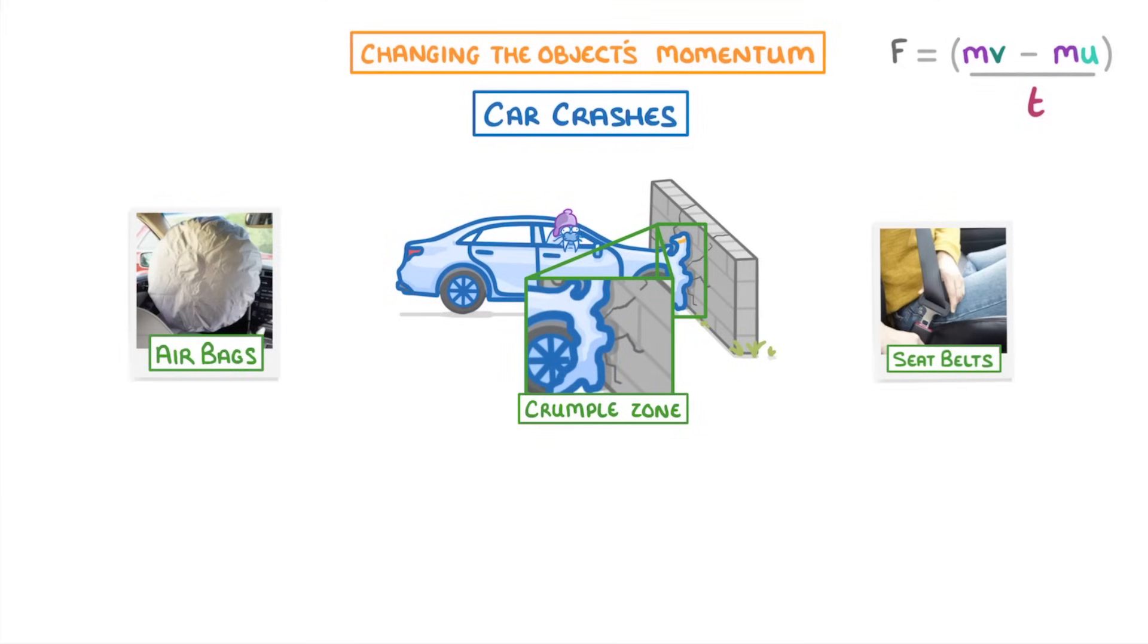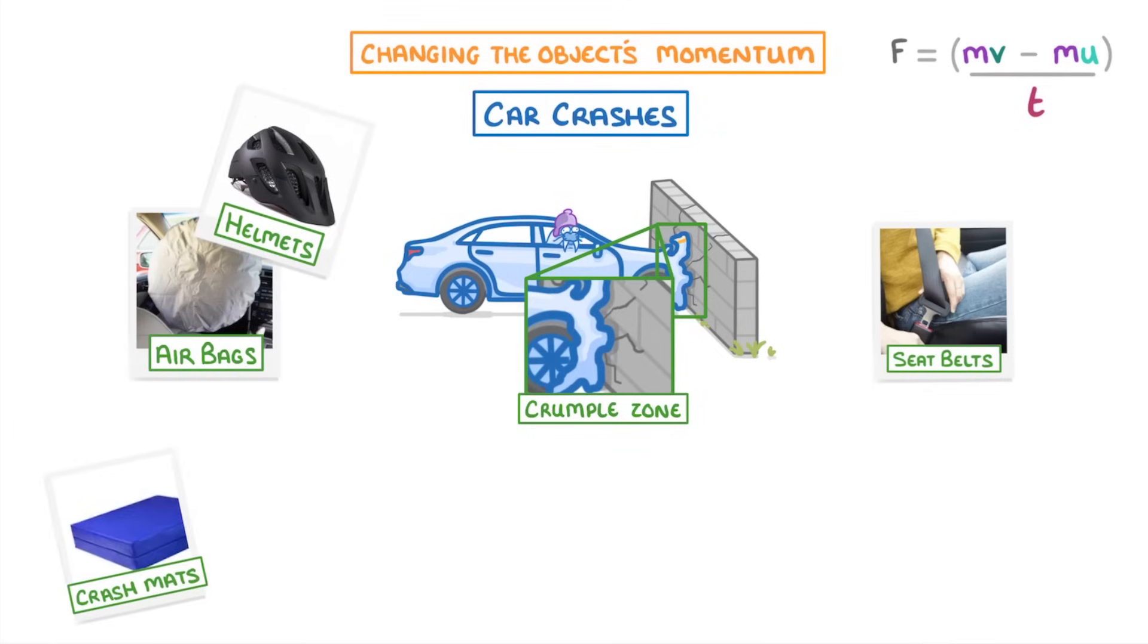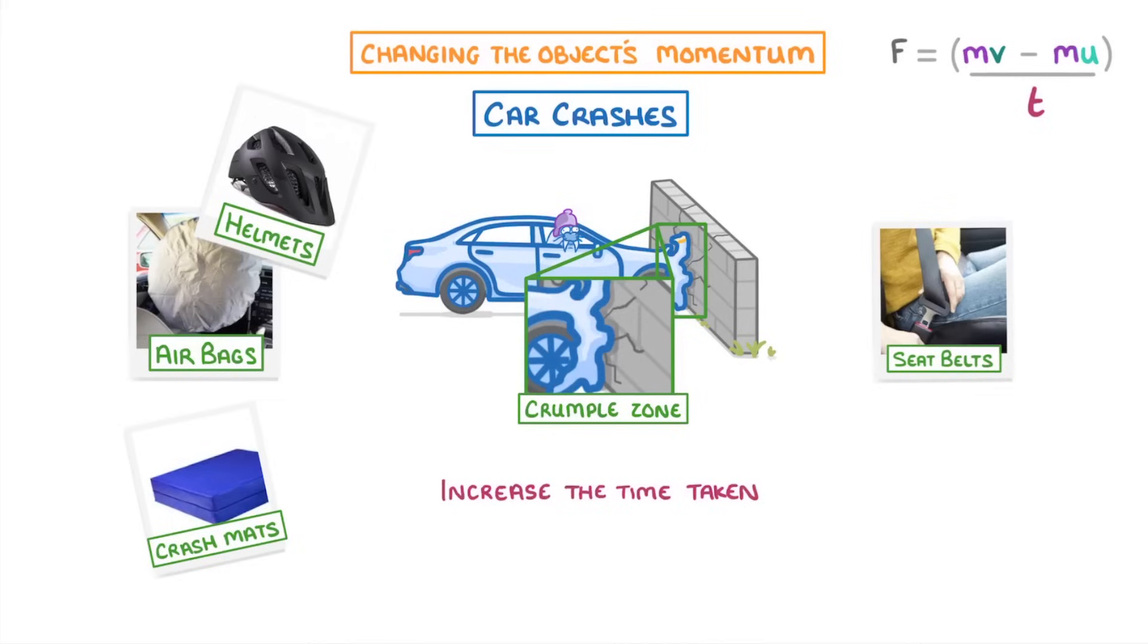Lots of other safety systems work in a similar way, for example, helmets or crash mats. The key thing to remember is that all of these increase the time it takes for the momentum to be lost, which results in a lower force acting on the person, and so reduces the risk of harm.